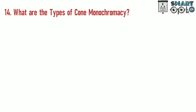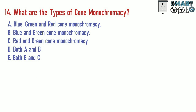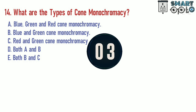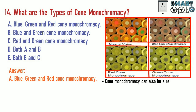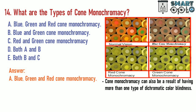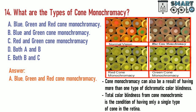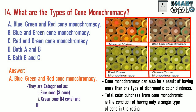Question 14. What are the types of cone monochromacy? Cone monochromacy can also be a result of having more than one type of dichromatic color blindness. Total color blindness from cone monochromacy is the condition of having only a single type of cone in the retina. They are categorized as blue cone (S cone), green cone (M cone), and red cone (L cone) monochromacy.